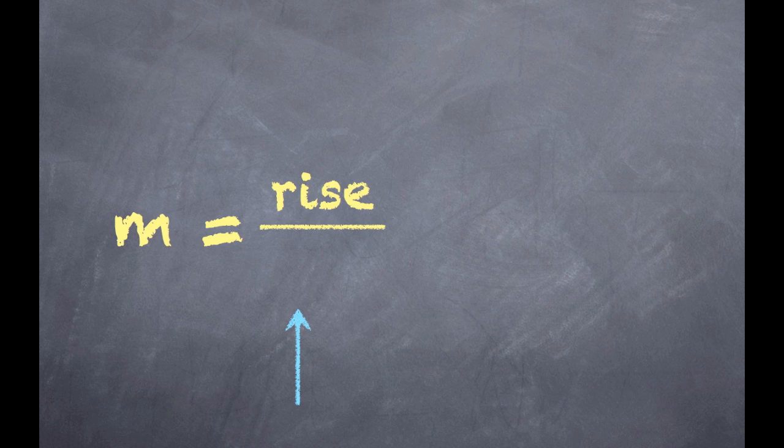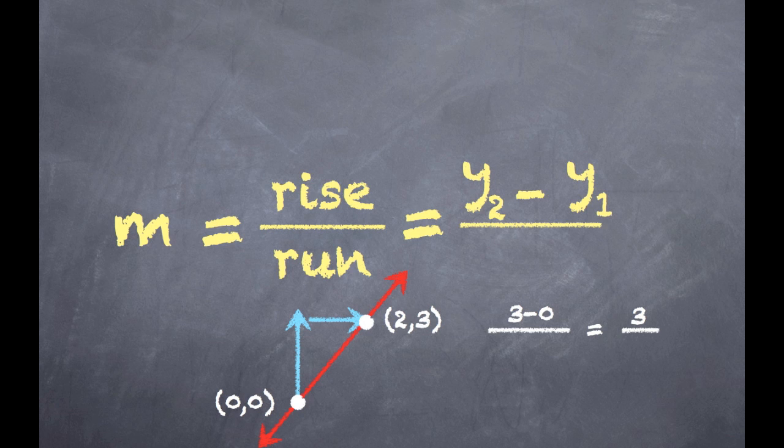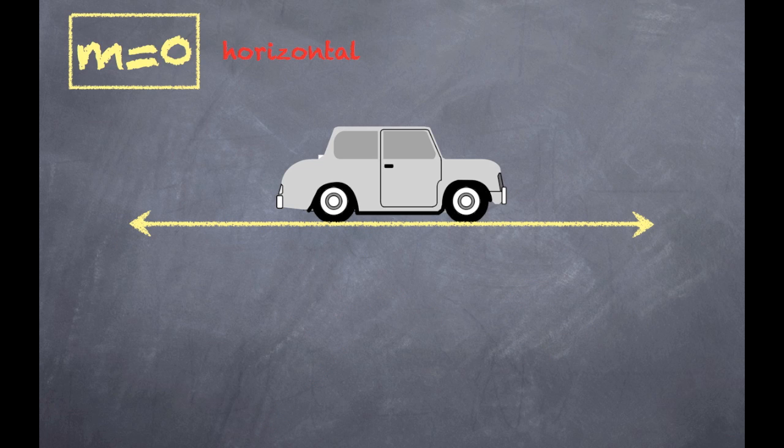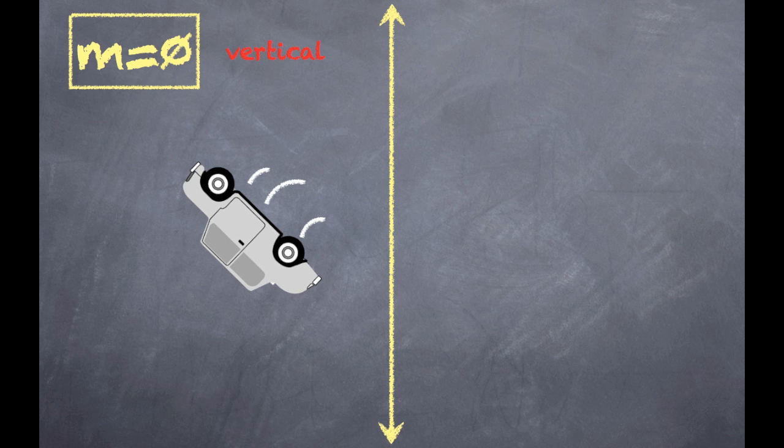Slope is the rise over run, y2 minus y1. Put that over the same thing for x. If it's zero, it's flat, horizontal and flat. Undefined, it's a vertical line.